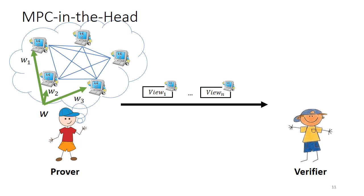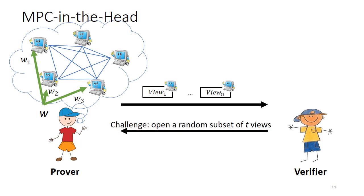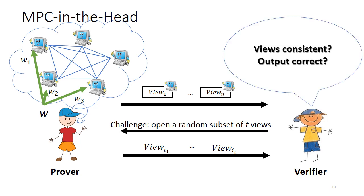After the simulation, the prover commits to the views of the different servers — that means it commits to both the input shares, the randomness, and the exchanged messages of each server individually — and sends these commitments to the verifier. The verifier then asks the prover to open a certain subset of T views of this multi-party computation interaction. The prover opens those commitments, and the verifier inspects the views, checking that the exchanged messages were consistent, that each server acted consistently with its input and randomness, and that the correct output was obtained. The verifier then accepts or rejects.